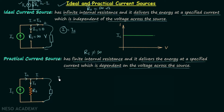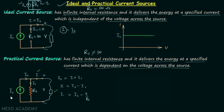Using KCL, IS equals I plus I1, so I equals IS minus I1. The voltage across the source is V volts, and therefore the voltage across RS is also V volts. From Ohm's law, I1 equals V over RS, so I equals IS minus V over RS. From this equation, the current drawn by the element depends on the voltage across the source.